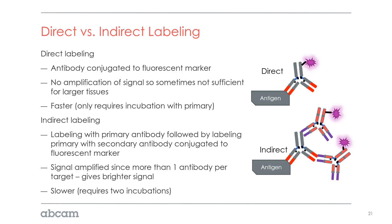With direct labeling, the antibody is conjugated to a fluorescent marker. There's no signal amplification, so it's sometimes not sufficient for larger tissues. However, this is faster. If we're only using primary labeling, we don't have to go through a secondary labeling process, which doubles our labeling time. For example, labeling a whole mouse brain could take 240 hours with primary and secondary, whereas with just primary labeling it would be 120 hours — cutting that time in half.